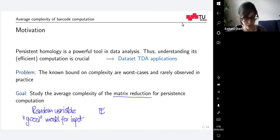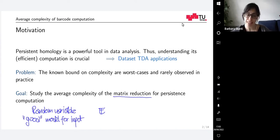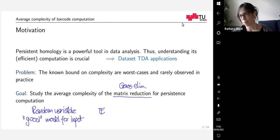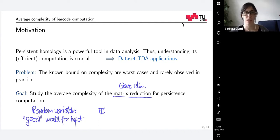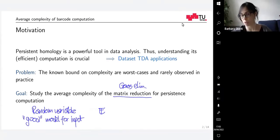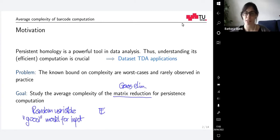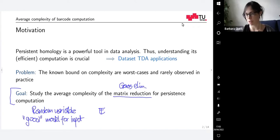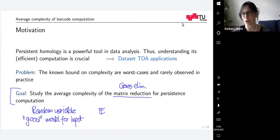We focus on matrix reduction because the most efficient algorithms for computing persistent homology are basically Gaussian elimination, but harder. In standard Gaussian elimination we can sum columns with scalar multipliers or swap them, and the same with rows. But in persistent homology we can only do one type of operation, which means we cannot use the previous literature on average complexity of matrix reduction, because persistent reduction is a proper subset.